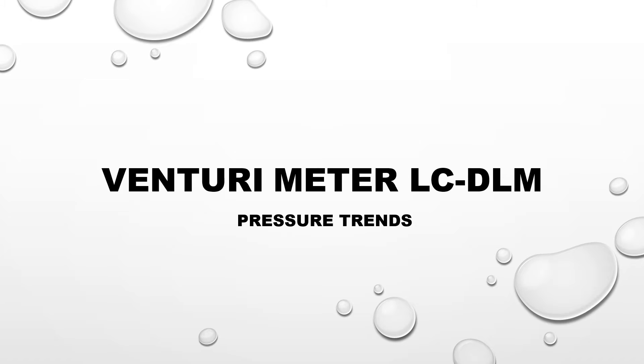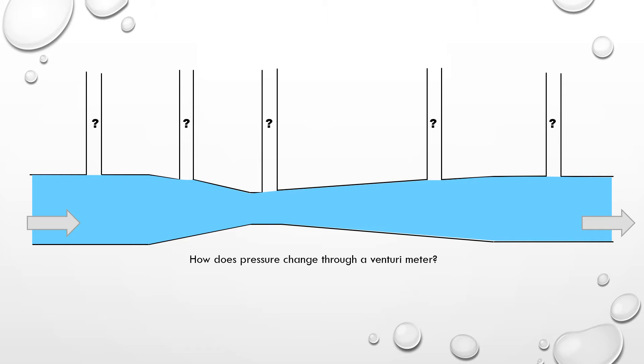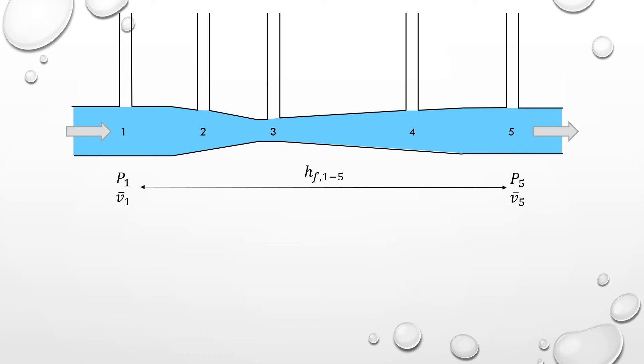Let's consider the pressure trends in a venturi meter using the mechanical energy balance equation. The mechanical energy balance gives the relationship between kinetic energy, flow work or pressure divided by density, and frictional losses between two points in a system, such as the losses between points 1 and 5.